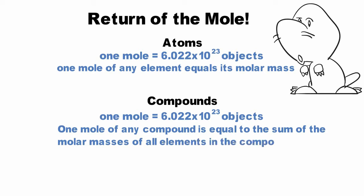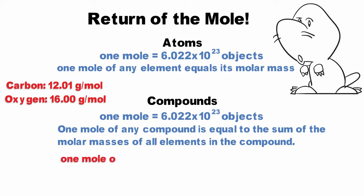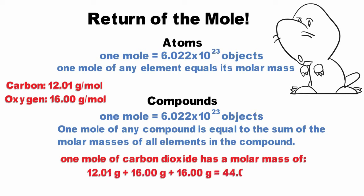One mole of carbon has a molar mass of 12.01 grams per mole and one mole of oxygen has a molar mass of 16.00 grams per mole. We simply add together the molar mass of each element in the compound. So carbon dioxide has one carbon and two oxygens which means that one mole of carbon dioxide has a molar mass of 44.01 grams per mole.